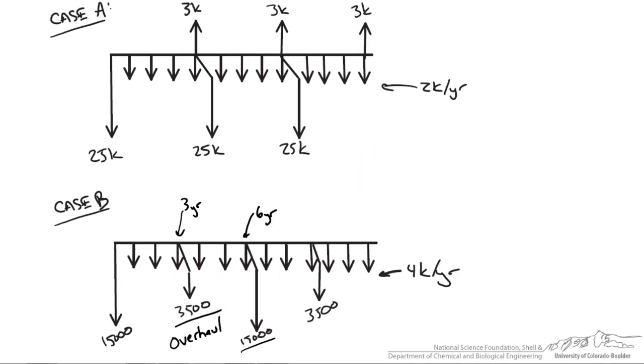So just looking at these two cash flow diagrams, the fact that we have some kind of salvage value in case A, and our maintenance is $2,000, compared to case B where our maintenance is $4,000, it appears case A would be the better choice. But this is why it's important to use present worth analysis.